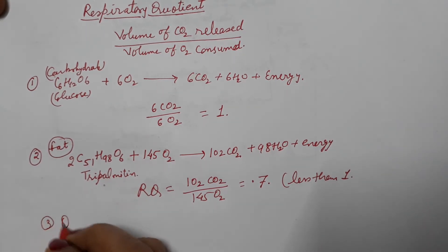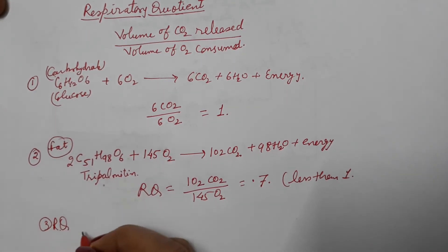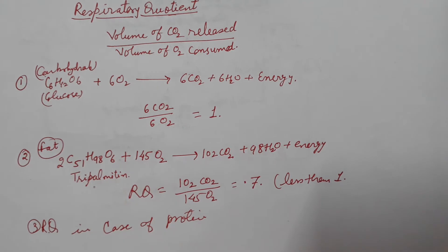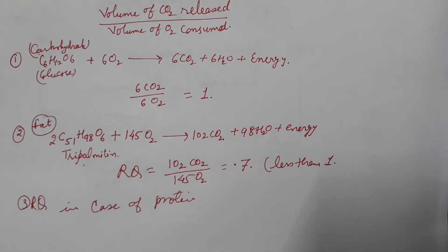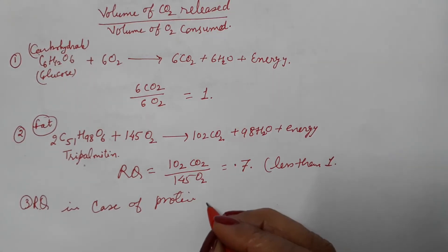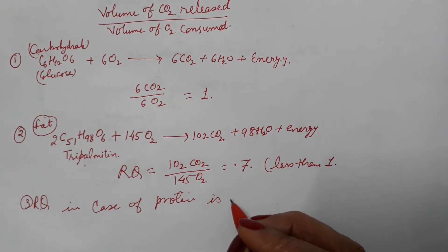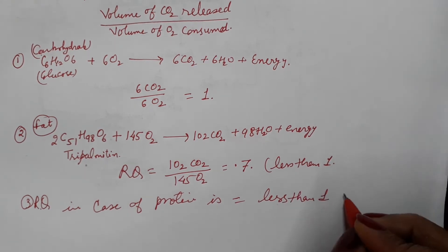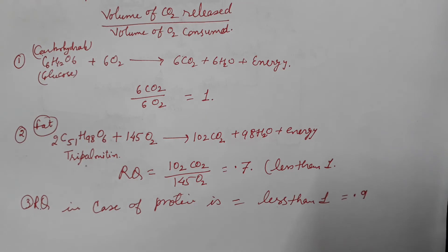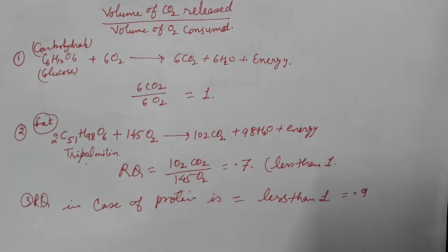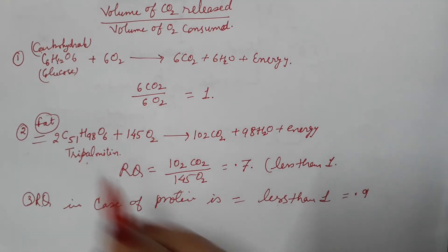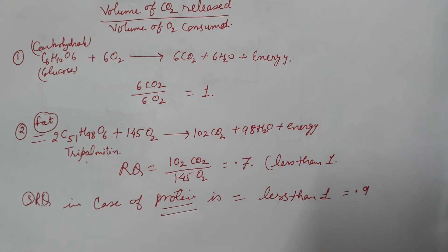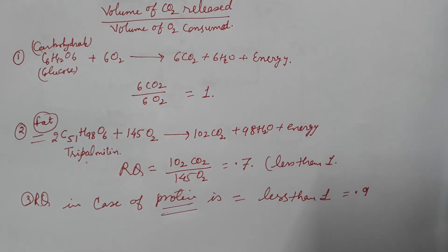The value of RQ in case of protein is also less than 1 — approximately equal to 0.9. So, in case of fat as well as in case of protein, the value is less than 1. But in case of carbohydrate, the value is equal to 1.